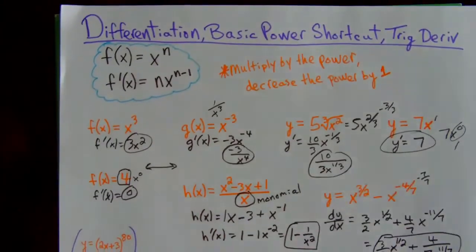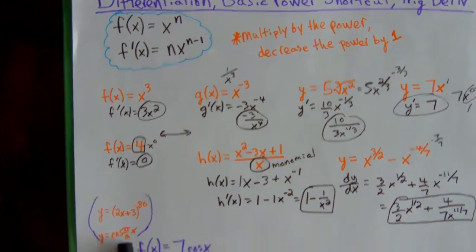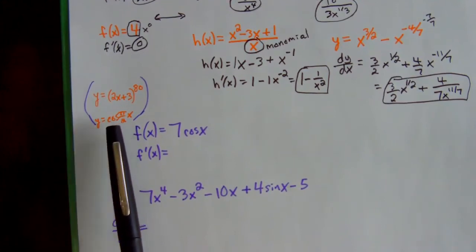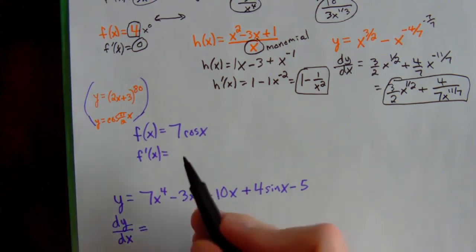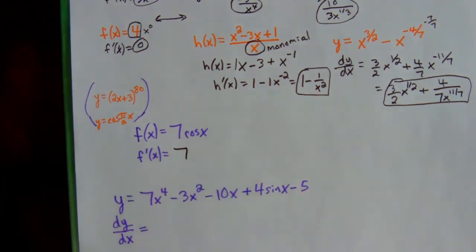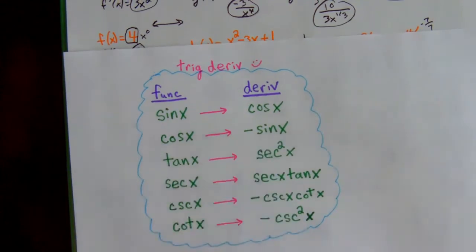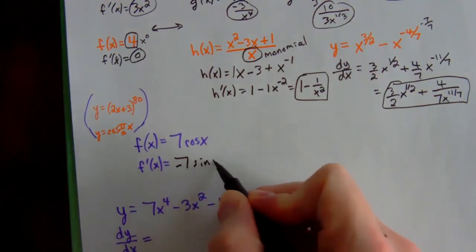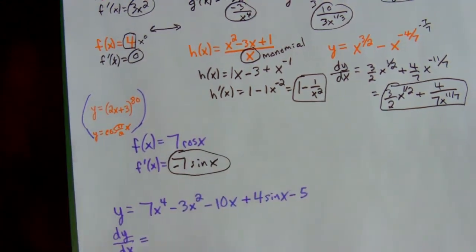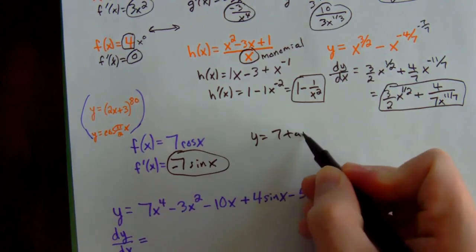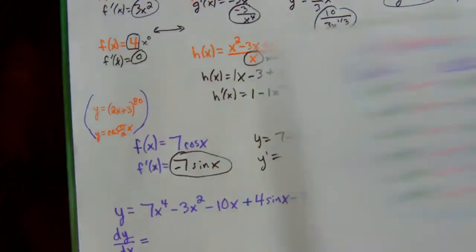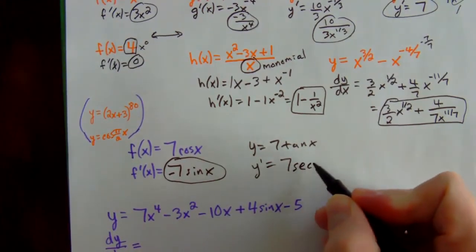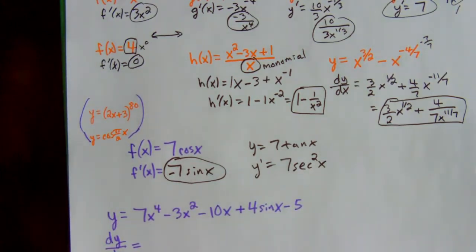We're not handling things like cosine of 2x yet — that requires a different technique. For now, you'll only have single x arguments. A basic example: if you have a constant in front, just carry it down and apply the trig derivative. The derivative of cosine is negative sine, so you get negative sine of x. For y equals 7 tangent of x, carry down the 7 and apply the derivative of tangent, which is secant squared, giving 7 secant squared x.